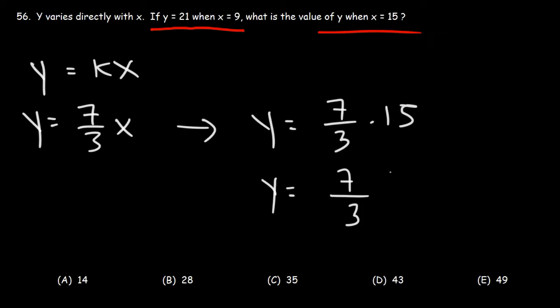15 is basically 5 times 3. And so we could cancel a 3, and then all we have left over is 7 times 5, which is 15.